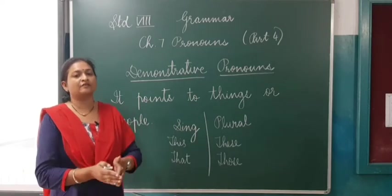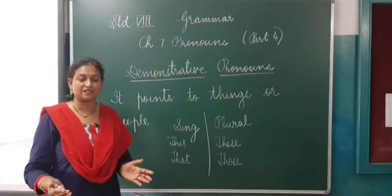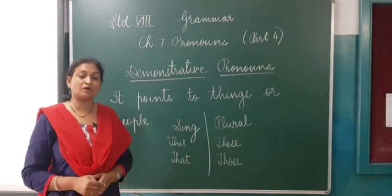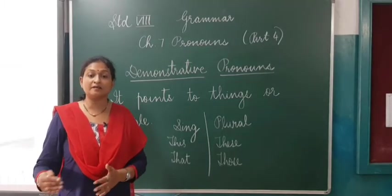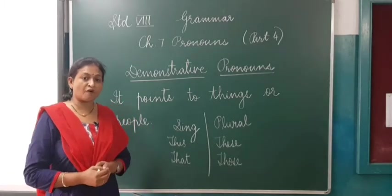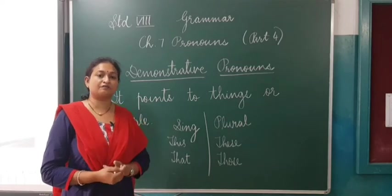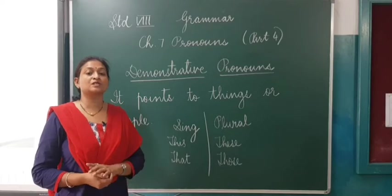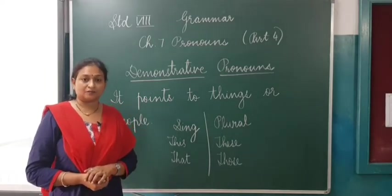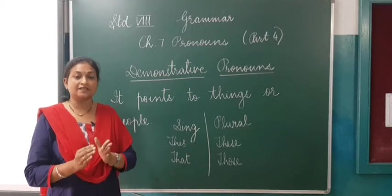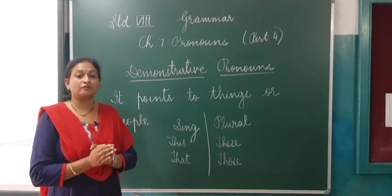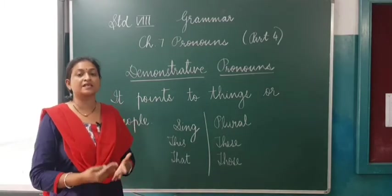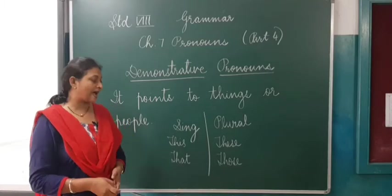If only one thing is present we use 'this'; if there are many things, we use 'these.' For example, 'This mango is yellow in colour.' If there are two or three, we say 'These mangoes are ripe.' And 'that' is for far — if there is a pen lying a little far away, we say 'That pen is mine.' 'Those books are of standard 8th.' So 'this' and 'that' are used for demonstrative; 'this' is for near and 'that' is for far; plural of 'this' is 'these' and plural of 'that' is 'those.'